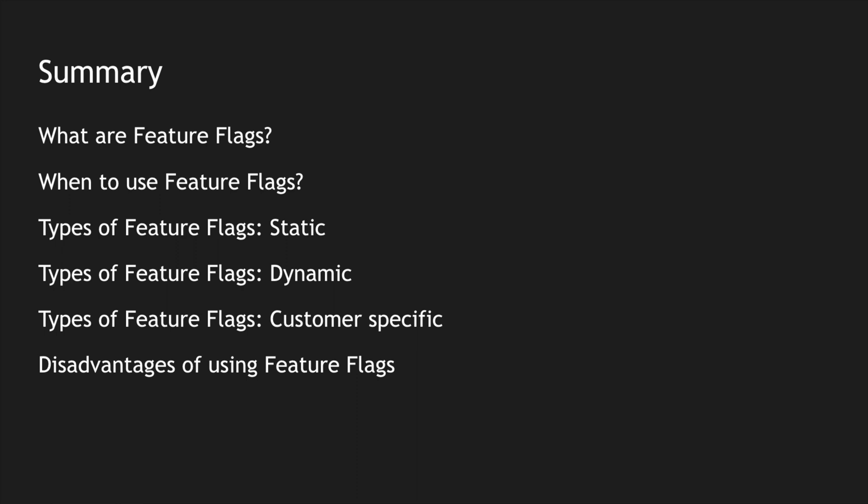To summarize: feature flags are an efficient way for teams to modify the behavior of a system without changing code or redeploying the application. We use feature flags in different occasions — trunk-based development, product launches, or enabling features for a subset of customers. There are three types: static (hard-coded in property files), dynamic (using a config server to determine the flag value), and customer-specific (a config server checks a per-customer flag).